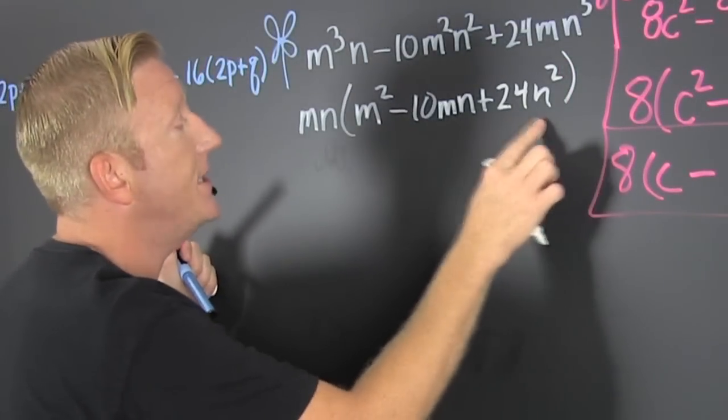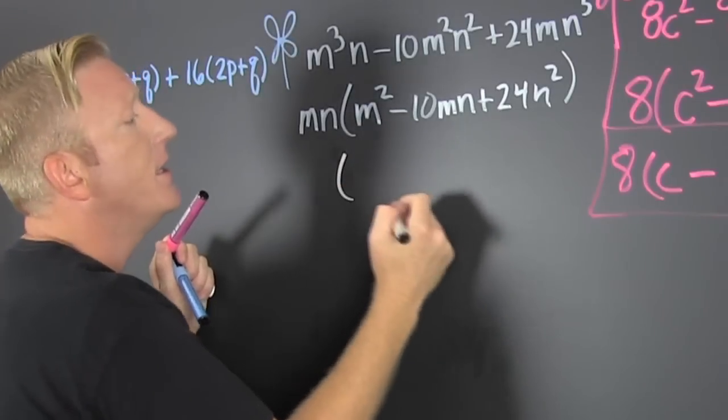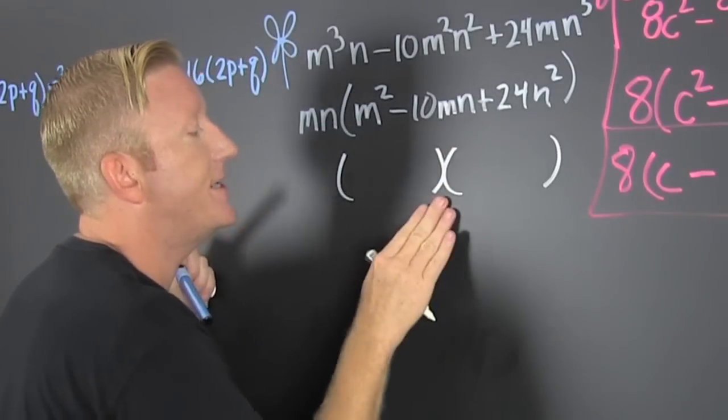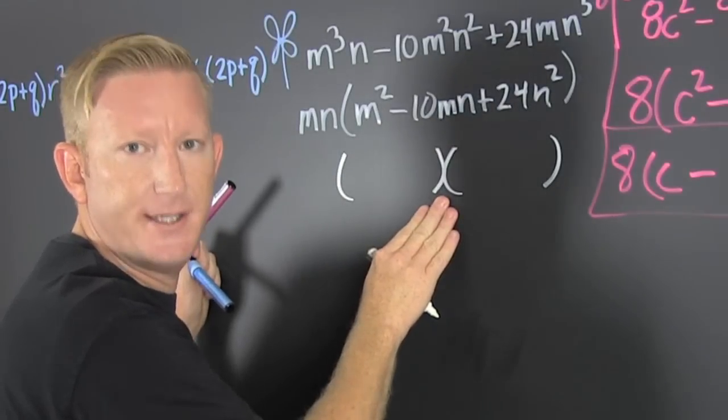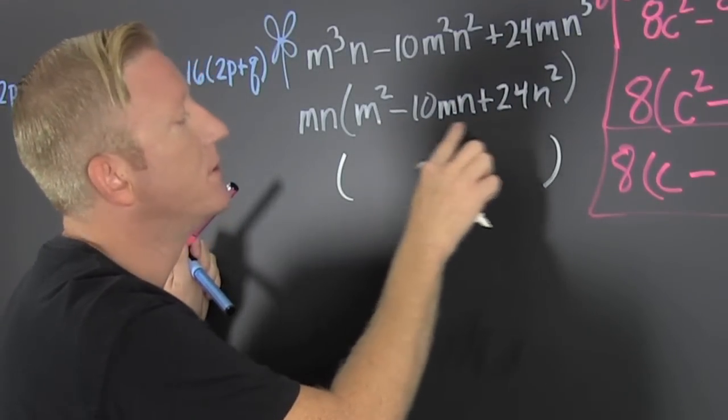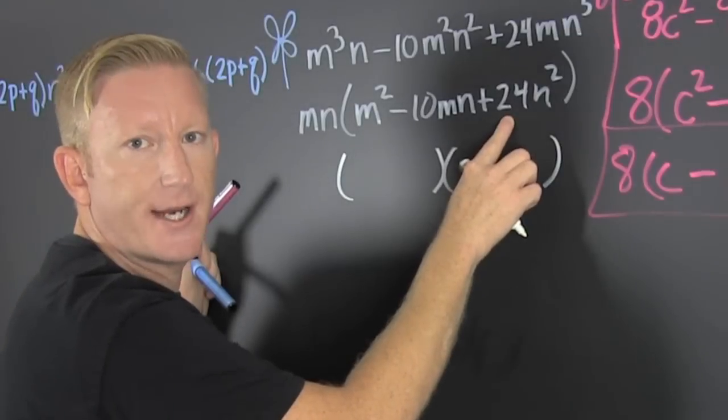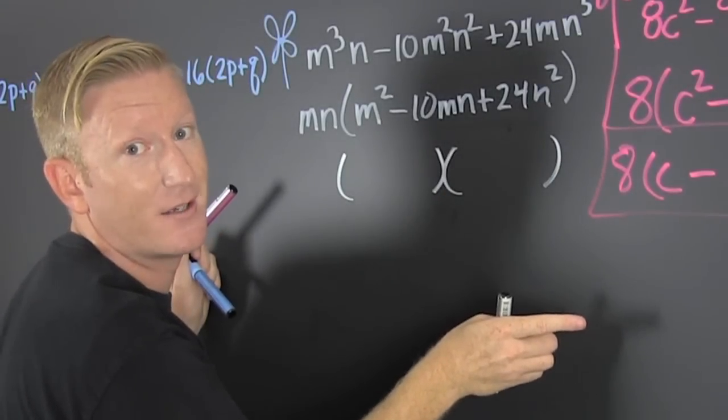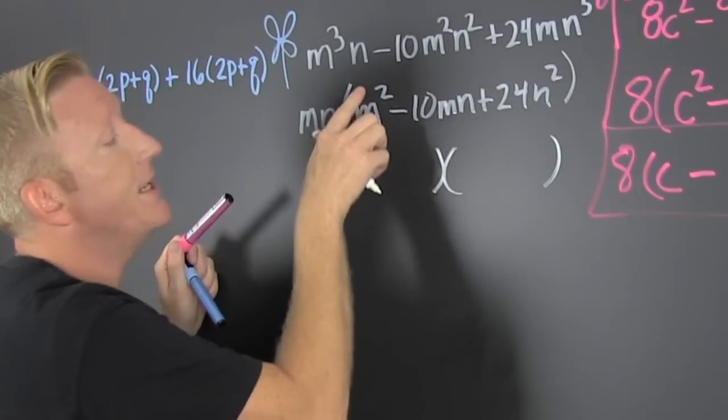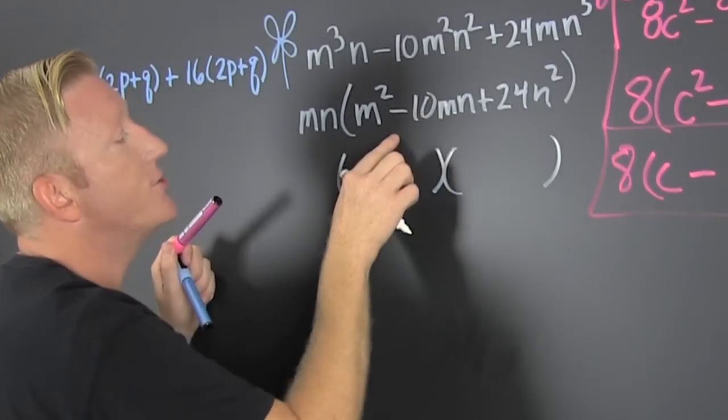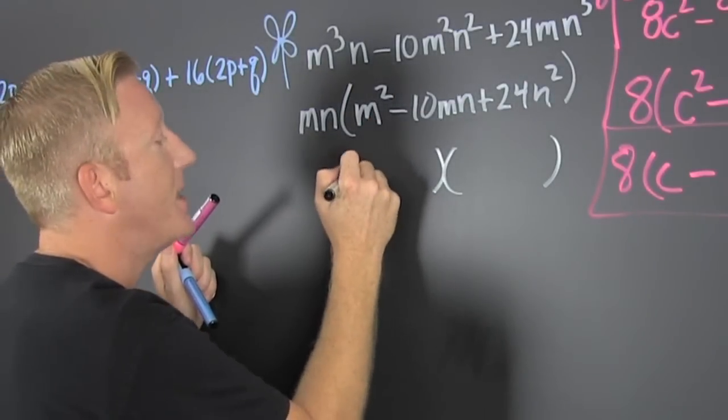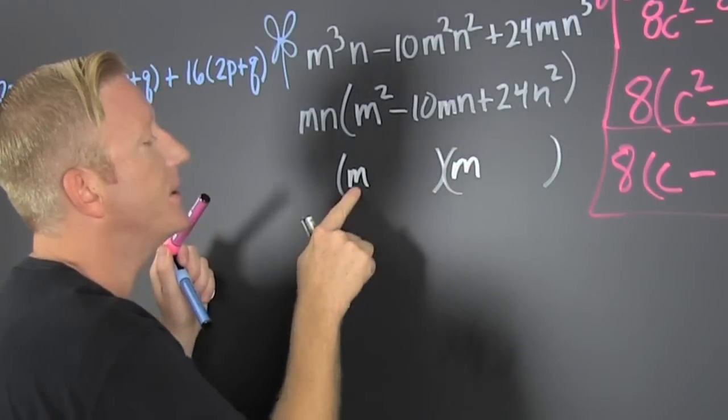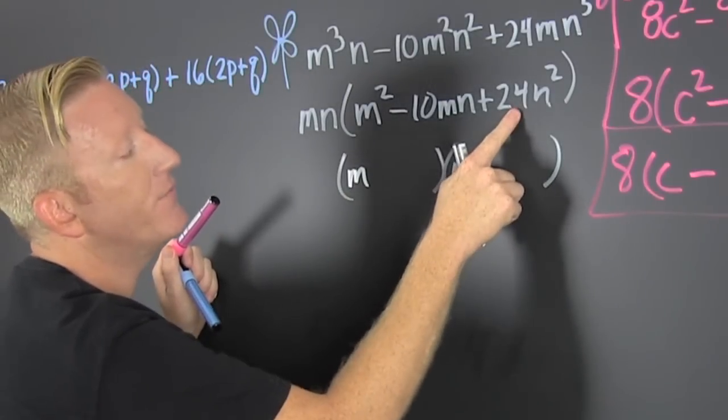Step one complete. Now what do we need to do? We need to go and we need to factor that inside. Gotta get that. In the description down below we talk about factoring things that are quadratic in form. It's quadratic this way and it's quadratic that way, so I'm gonna factor by magic.